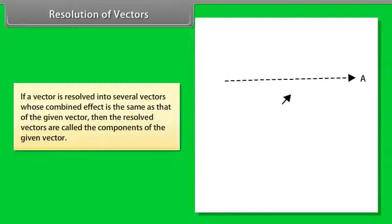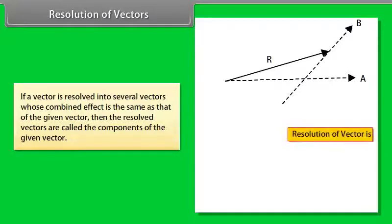If a vector is resolved into several vectors whose combined effect is the same as that of the given vector, then the resolved vectors are called the components of the given vector.